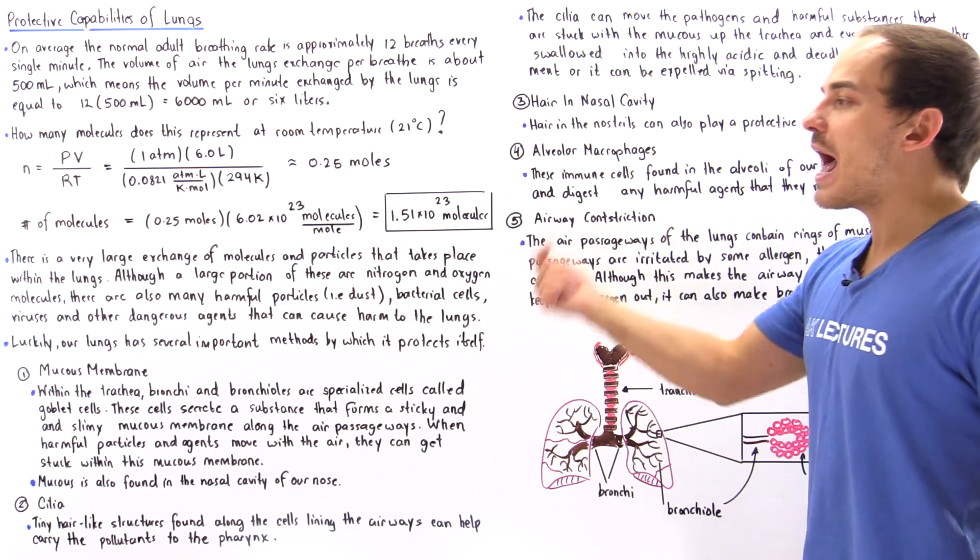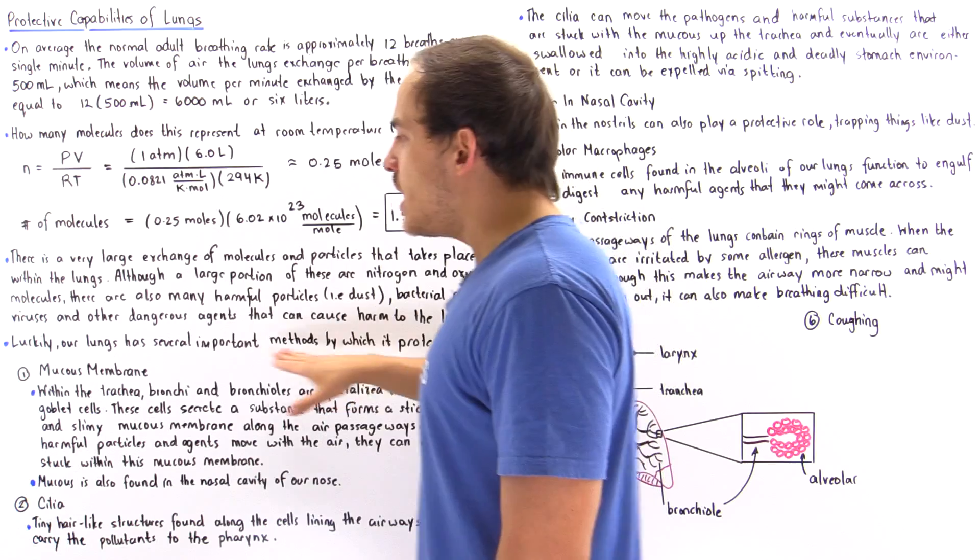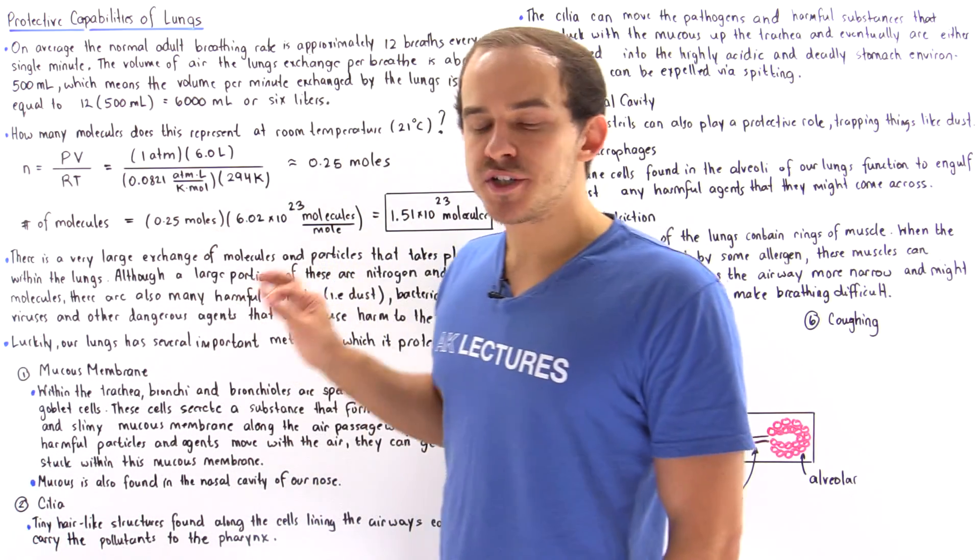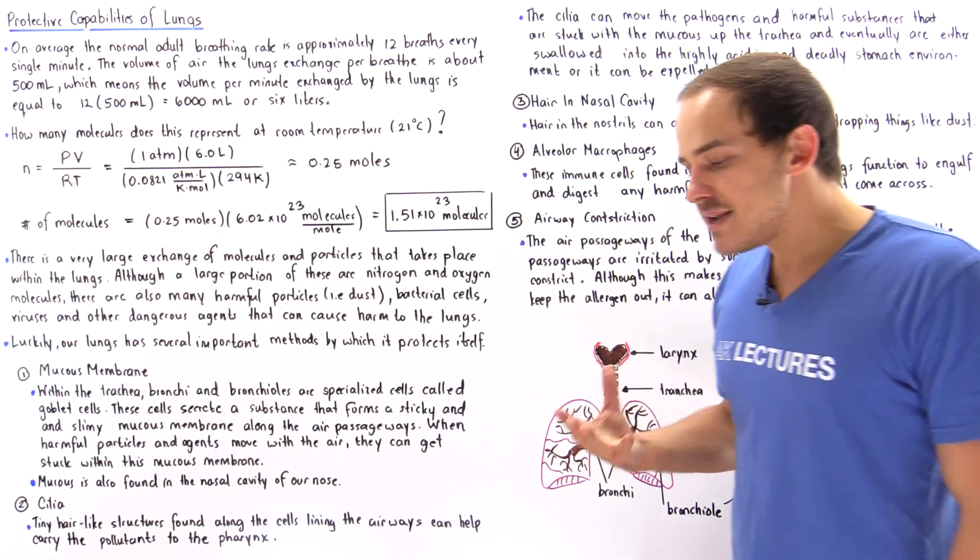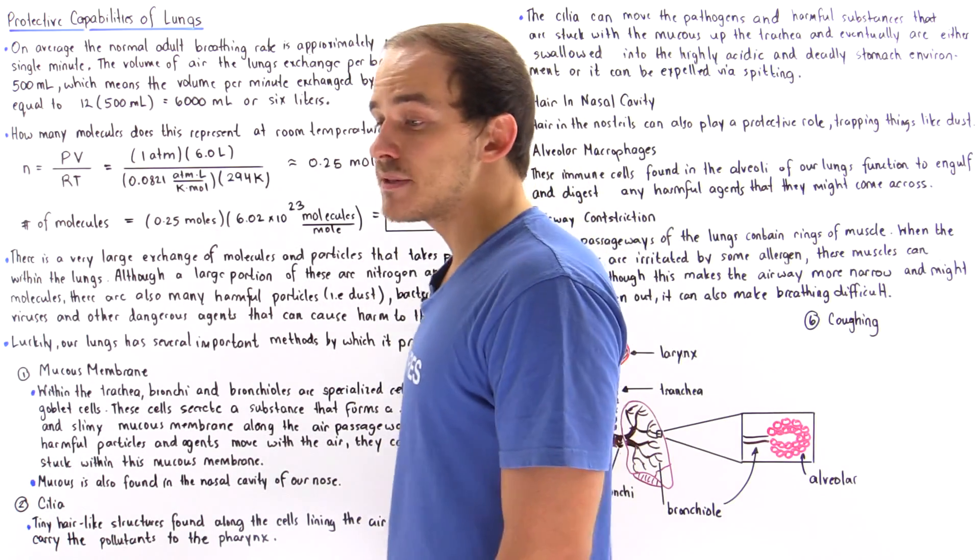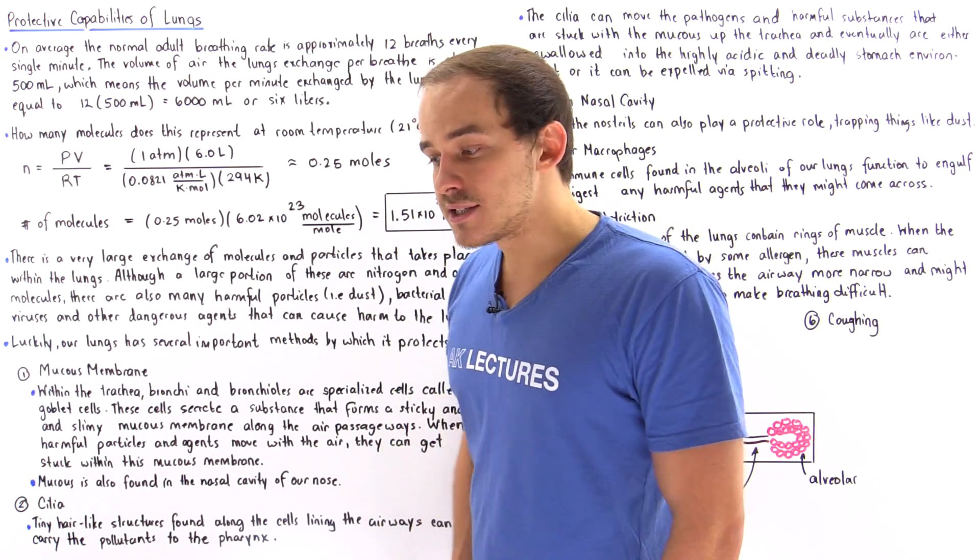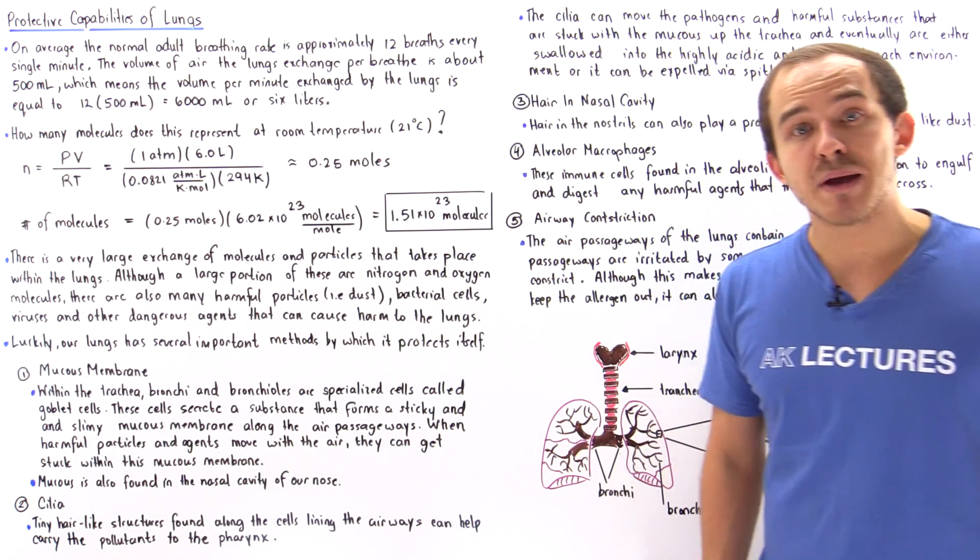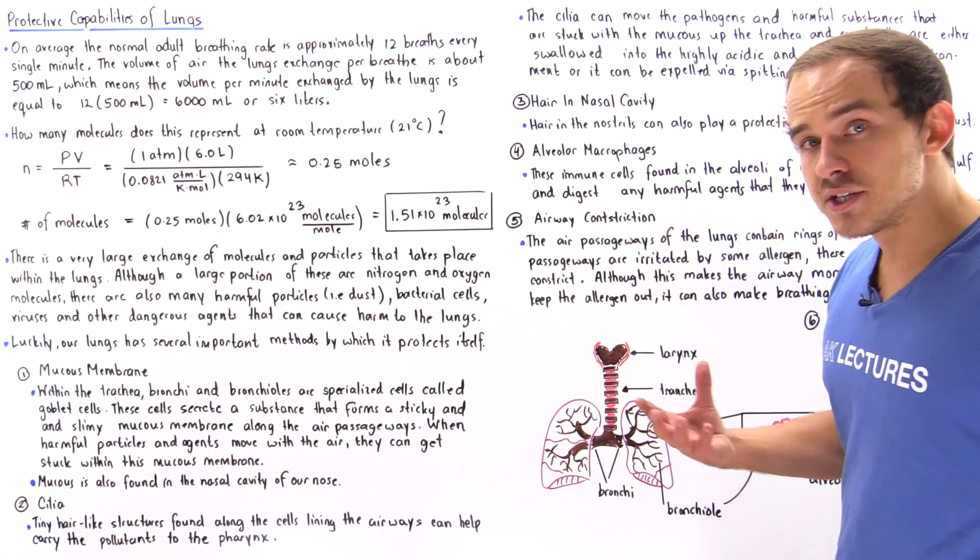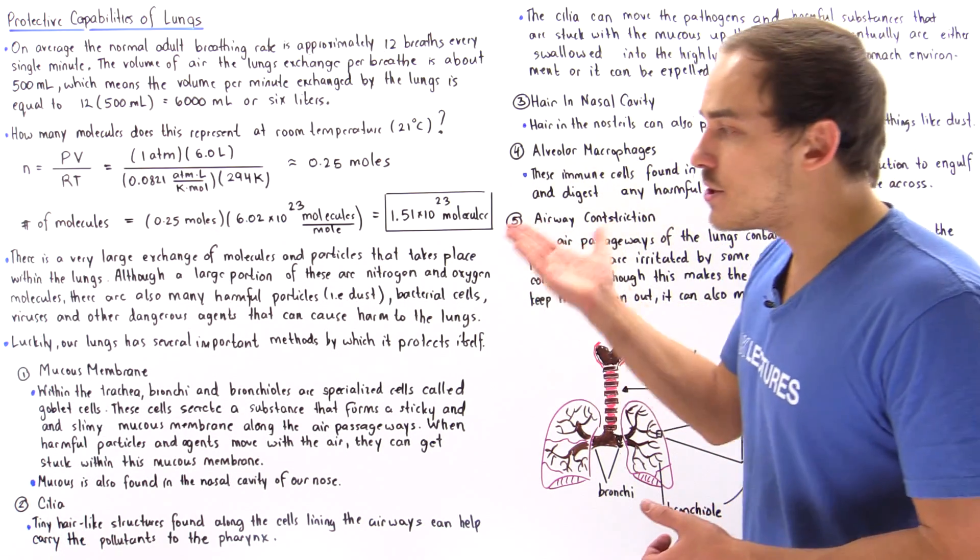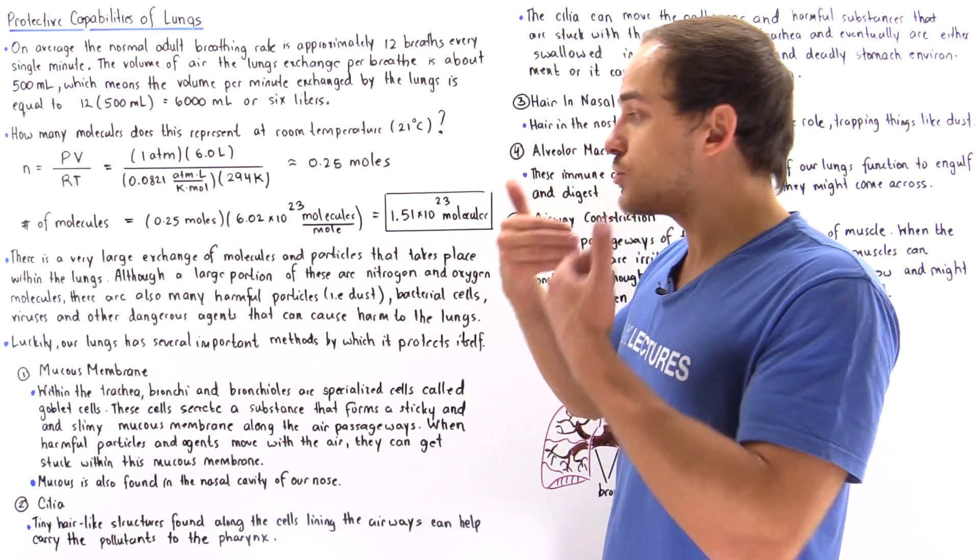Our lungs have several important methods by which they can protect themselves from these different types of agents that enter our body when we breathe in air. Number one is mucous membrane. Inside our passageways we have specialized types of cells known as goblet cells, and these goblet cells can produce and secrete a special type of sticky and slimy material substance that forms the mucous membrane.